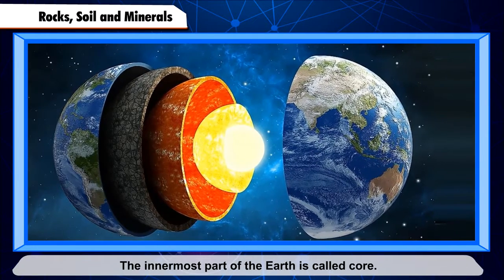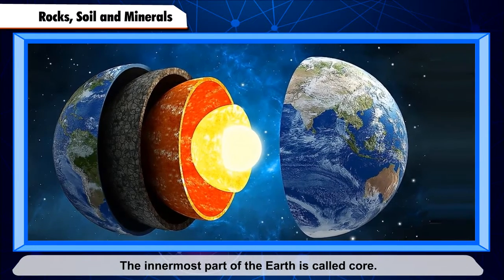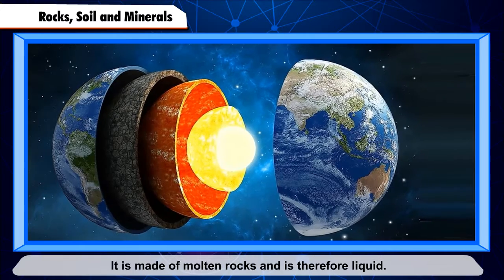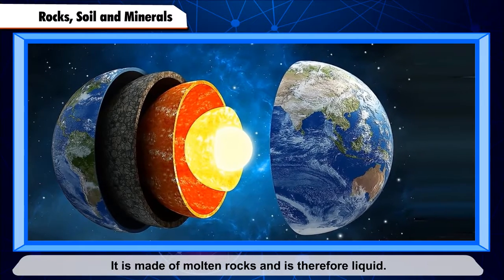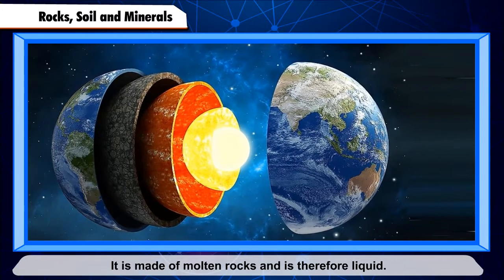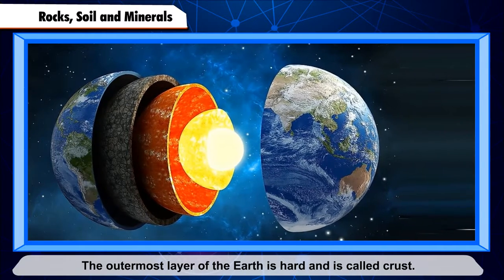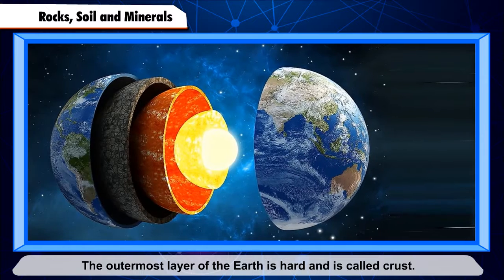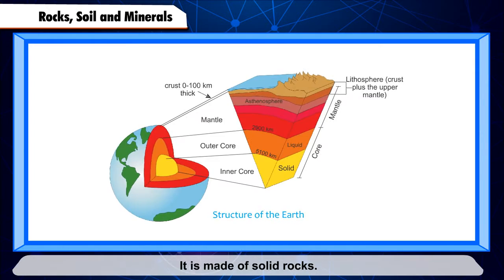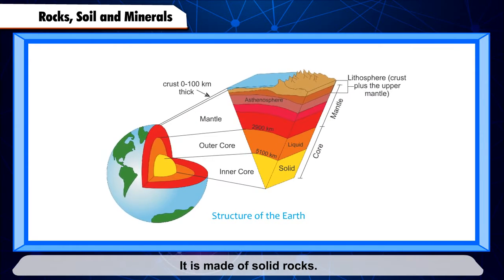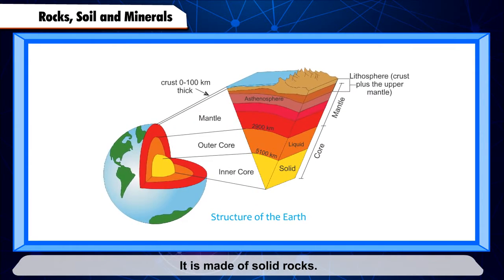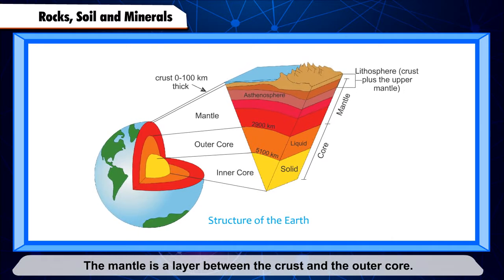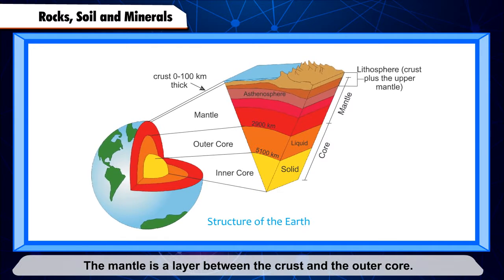The innermost part of the earth is called the core. It is made of molten rocks and is therefore liquid. The outermost layer of the earth is hard and is called the crust. It is made of solid rocks. The mantle is a layer between the crust and the outer core.